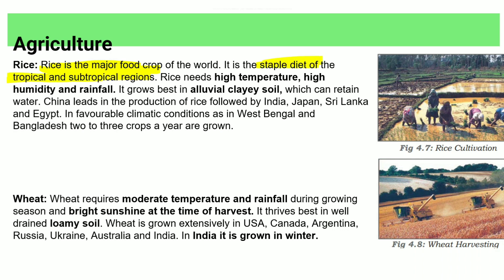Rice grows in tropical and subtropical regions with high temperature, high humidity, and heavy rainfall. It requires alluvial clay soil. West Bengal has favorable climate conditions for rice. Wheat requires moderate temperature during the growing season, bright sunshine, and low rainfall. It is grown in Ukraine and during the winter season.